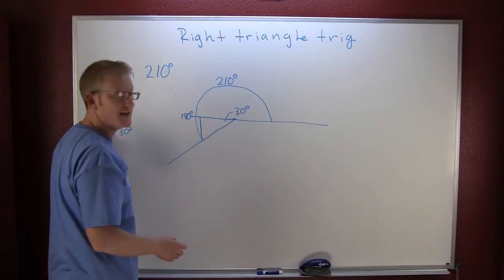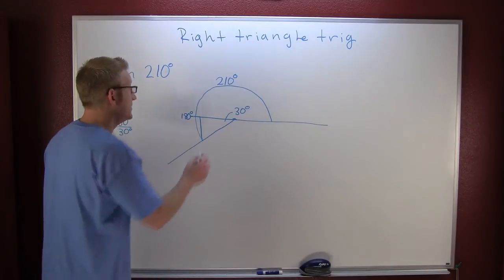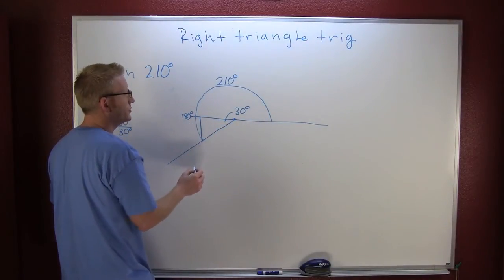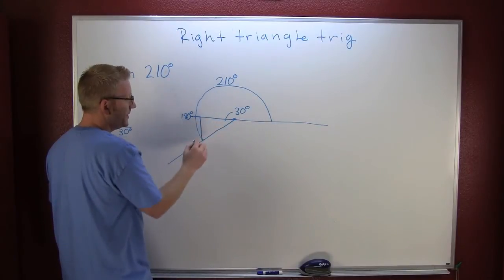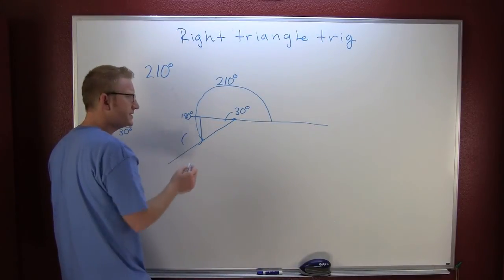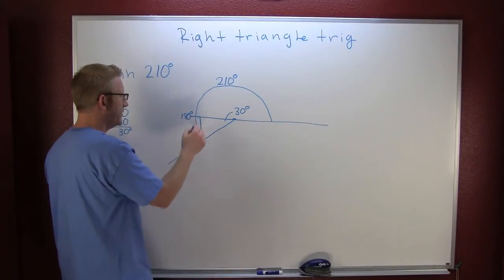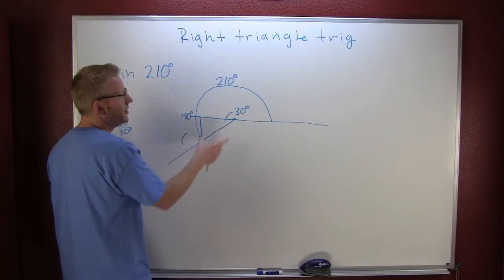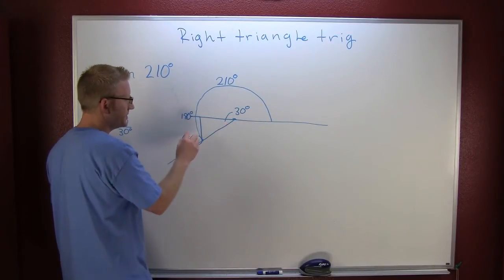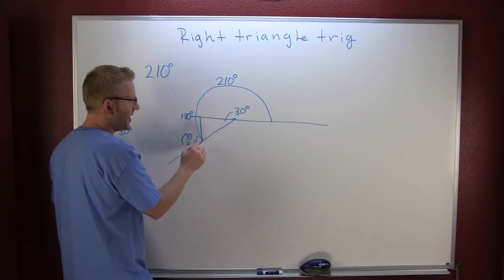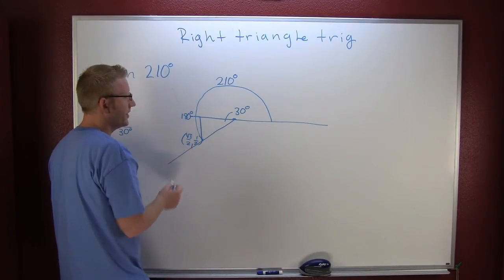So then with my reference angle, I have a reference triangle. So a 30 degree measure, that from your unit circle is going to have coordinates of, which one's longer? The x or the y? The x is longer, so this is root 3 over 2, and this is 1 half.